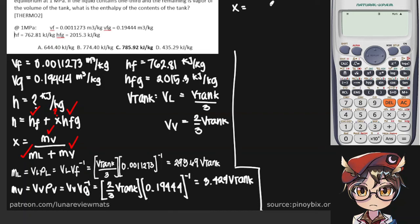Let's say this is V sub t because we are running out of space. Sorry about that. And then 295.69 times the volume of our tank plus 3.429 times the volume of our tank. These cancel out.